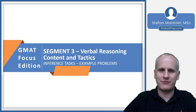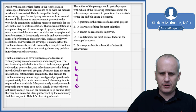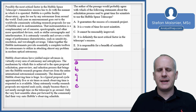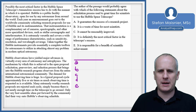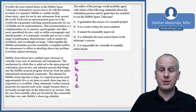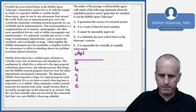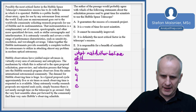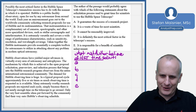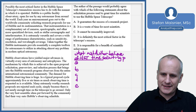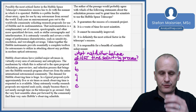Let's head to the whiteboard and see how we execute our process for inference tasks using our scratch pad. As always, we set up scratch work first — we've got A, B, C, D, E with a line over top. We see the question: 'The author of the passage would probably agree with which of the following statements about the solicitation process used to grant time for scientists to use the Hubble Space Telescope?' So: what must the author believe about the HST time soliciting process?